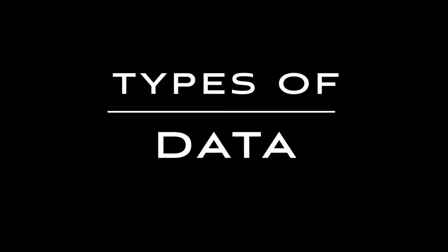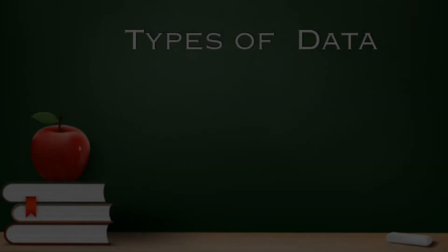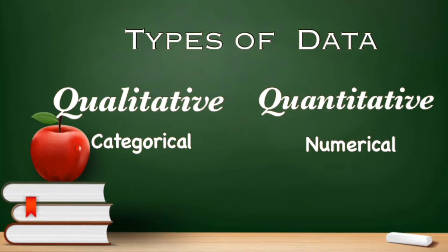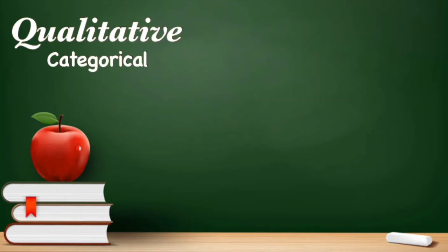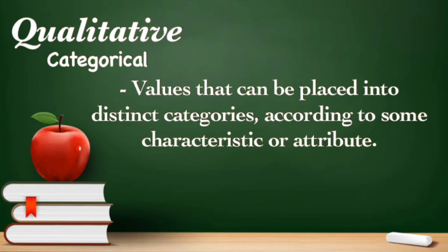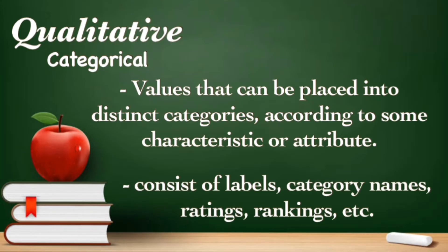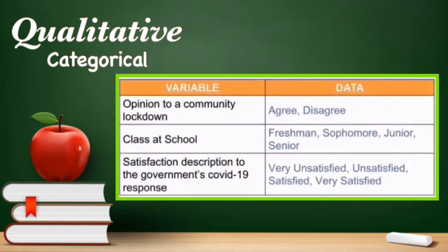Data can be classified as qualitative or quantitative. This is very important because the statistical analysis appropriate for a particular variable depends upon whether the variable is qualitative or quantitative. The first type of data is qualitative, or categorical data. These are values that can be placed into distinct categories according to some characteristics or attributes — for example, opinion, class at school, satisfaction level, or description.